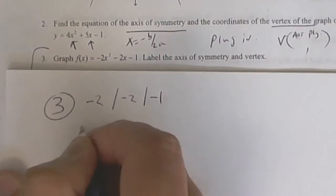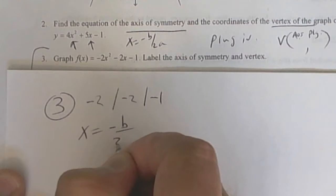Now put x equals negative b over 2a. They're all going to work this way.